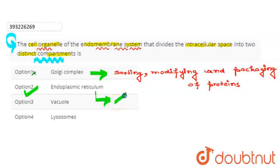और जैसे कि हम जानते हैं कि endoplasmic reticulum यह हमारे two types के होते हैं, which is rough endoplasmic reticulum and smooth endoplasmic reticulum.